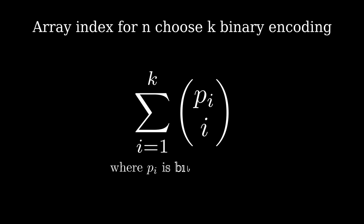This simplification yields a very tidy formula for deriving the array index of n choose k binary encodings. This can be coded very efficiently on a microcontroller, and used to index an array directly. There is no need for hash tables, Python dictionaries, or binary trees.